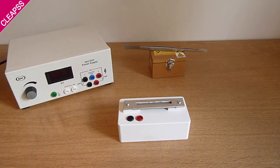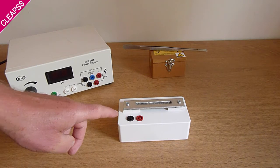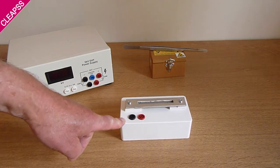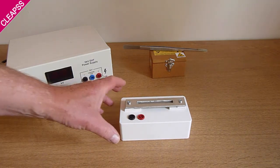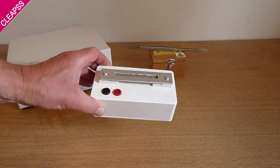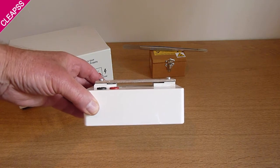I'm going to demonstrate the ionising properties of alpha radiation. Now a spark counter - this one here is one made following the CLEAPSS design. You can make your own, look at our guide GL172. It comprises a metal mesh, and beneath it is a very thin wire.